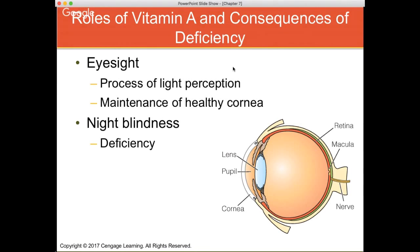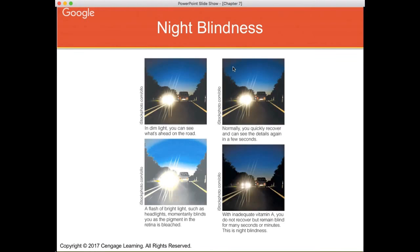Deficiency results in night blindness. If you're driving at night and a car shines its light in your eyes, normally you'll quickly recover and see details again in a few seconds. However, in vitamin A deficient individuals, they develop night blindness — that flash of light momentarily blinds them and they don't recover for a few seconds or minutes because the pigment in the retina is bleached.